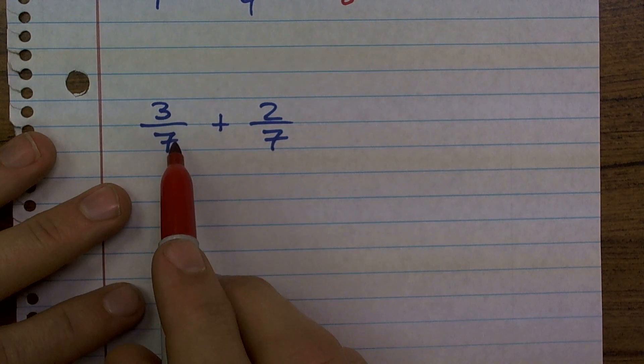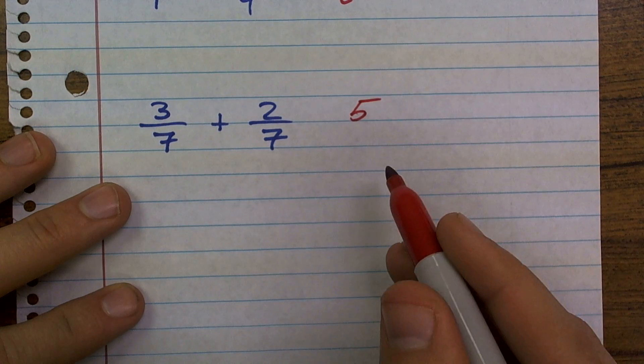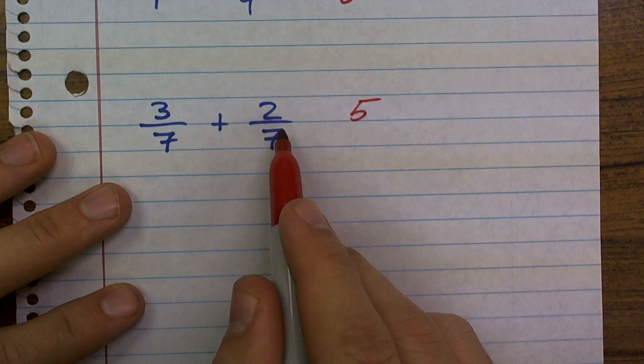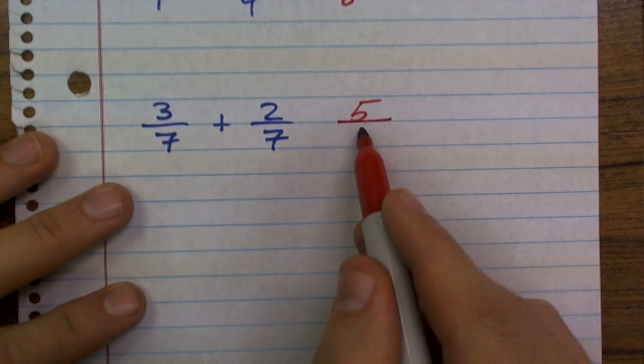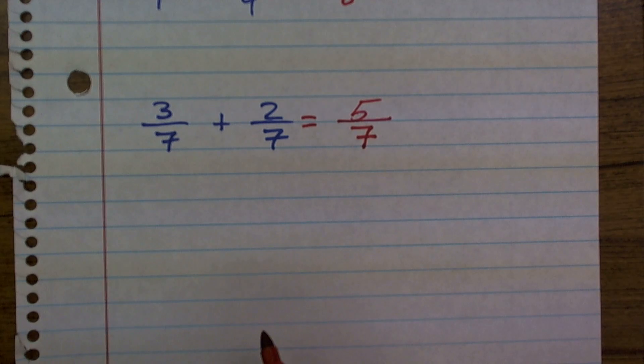If I wanted to add three sevenths plus two sevenths, I'd make sure I'd add the three plus the two. That's going to give me five. And then the seven is going to be my whole, so that's going to remain on the bottom. So therefore, three sevenths plus two sevenths equals five sevenths.